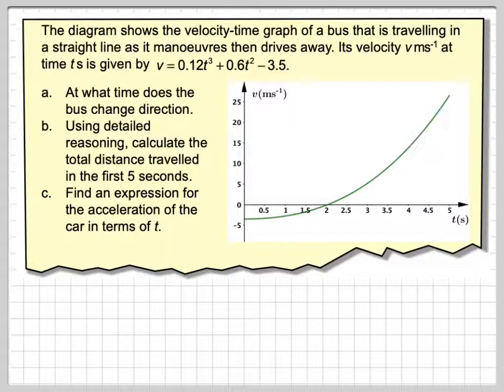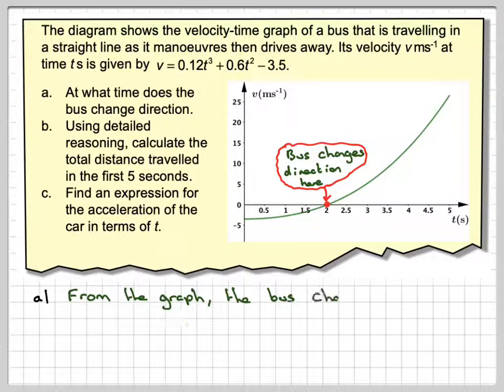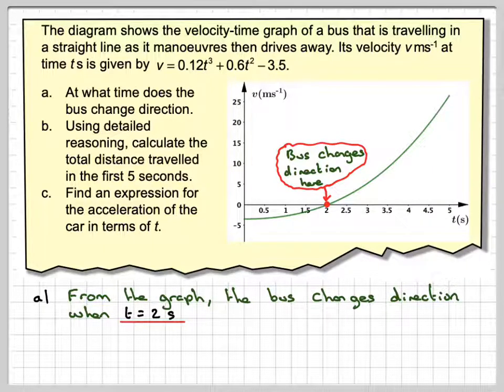The point that's important is this one here because this is where the bus will change direction, as the velocity goes from being negative to positive. So that means I change direction at that particular point. From the graph, the bus changes direction when t equals 2.